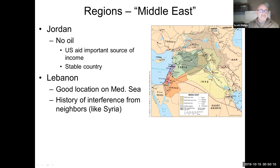In the Middle East, a couple of things to highlight. Jordan does not have oil resources, so its economy is highly dependent on United States foreign aid as a source of income, and it's a relatively stable country. Lebanon, next door to Syria, has a good location and climate and a fairly vibrant economy, but because it's next to Syria it has long had problems with neighbors trying to influence its politics — including foreign fighters, civil wars, and inter-country struggles.